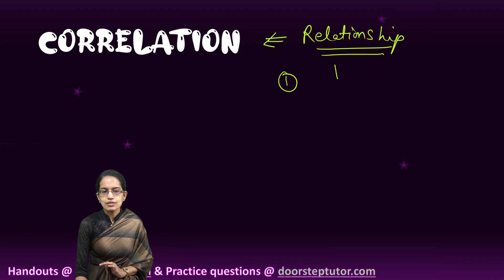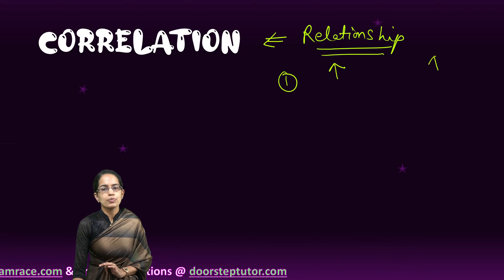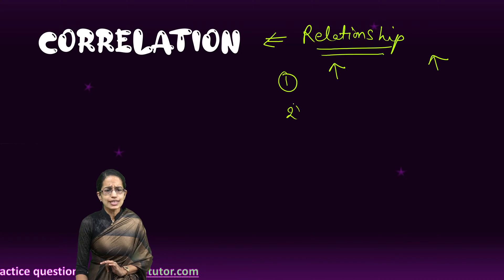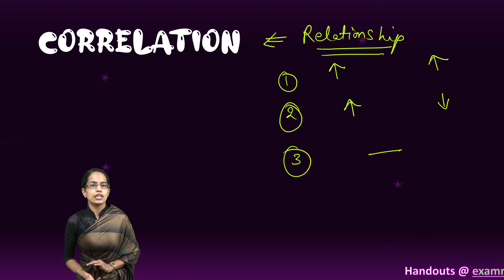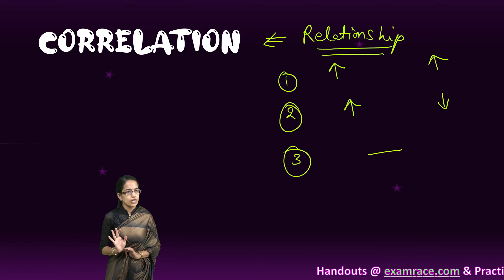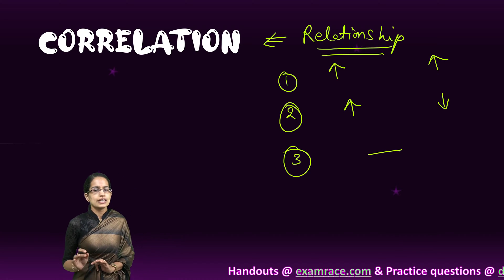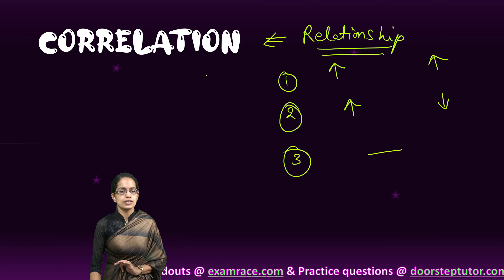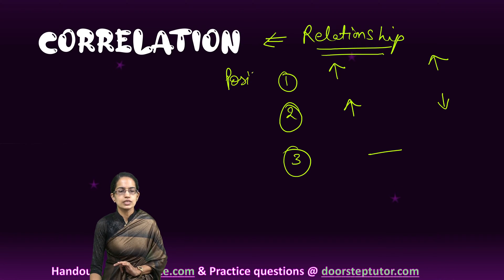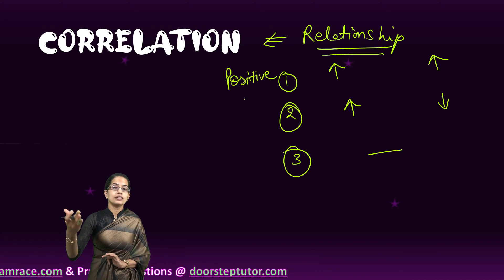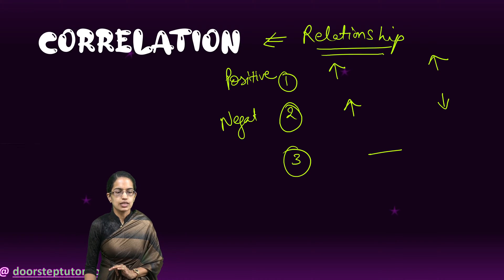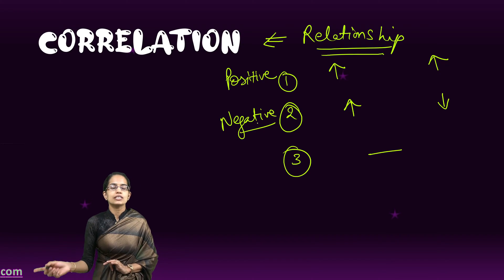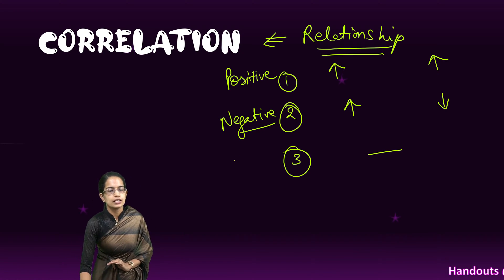The first is as the input increases, the output would increase. The second is when the input increases, the output can decrease. And the third is the output is independent of the input. In the first case when input increases and output increases, we say it is a positive correlation. When input increases but output is decreasing, it is a negative correlation. And when the output is independent of the input, there is no correlation.